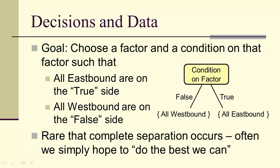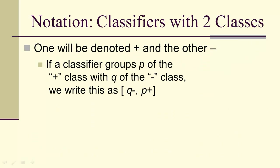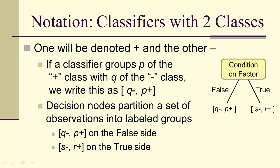This is actually a small decision tree — a condition on a factor is either false, in which case all westbound apply, or true, in which case all eastbound apply. Now we're looking at very simple cases. It's actually very rare that this kind of complete separation occurs. Now some notation: we're going to be denoting positives by plus and negatives by minus. East will be positive and west will be negative. So if a classifier groups P of the plus with Q of the minus, we write that as Q minus P plus. What a decision node does is it splits or partitions a set of observations into two labeled groups — Q minus P plus on the false side, S minus R plus on the true side.